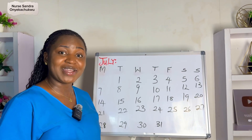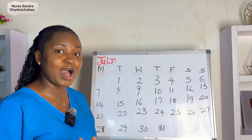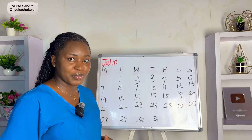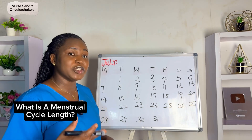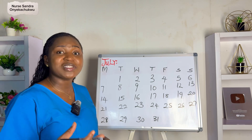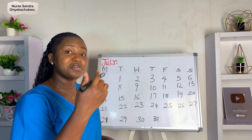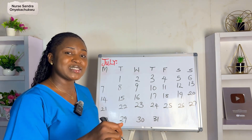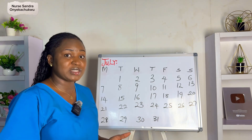Once you get it, you'll finally understand how your body works and how to calculate your menstrual cycle. What is a menstrual cycle length? Cycle length is not the number of days you bleed. Your menstrual cycle length is the number of days from the first day you see your period to the day before your next period begins.